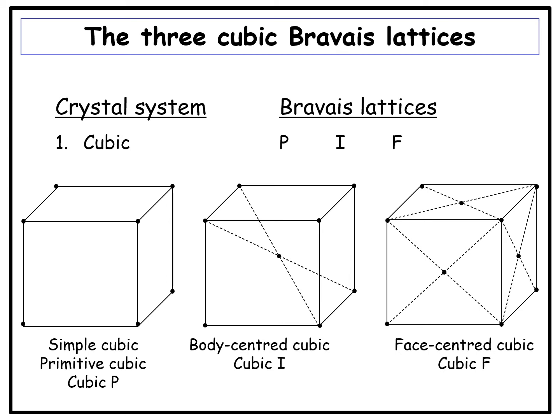Let us look at what we mean by simple cubic, body-centered cubic, and face-centered cubic. In simple cubic, the lattice points are only at the corners. In body-centered cubic, lattice points are at the corners as well as at the center of the cubic unit cell itself. In face-centered cubic, we have lattice points at the corners as well as at the centers of all six faces.